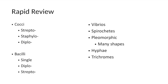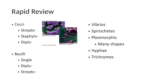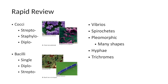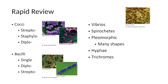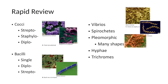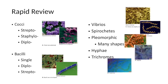Quick rapid review: first we have the cocci, which can be streptococci, staphylococci, or diplococci. Next were the bacilli — usually single individual cells, but can be diplo or strepto. The vibrios were the curved rods; spirochetes were our super spirally ones. Pleomorphs could have many shapes because they lack a cell wall. Some bacteria form hyphae, and last we had our trichomes — those stacked bacteria that made filaments.